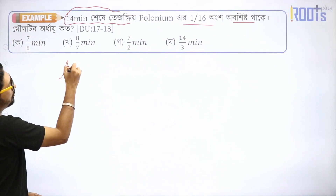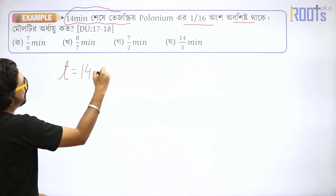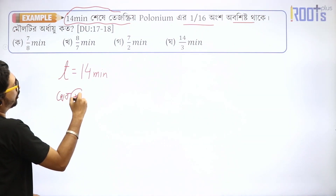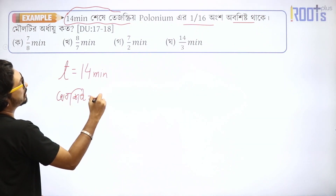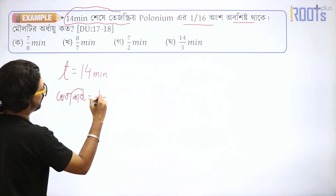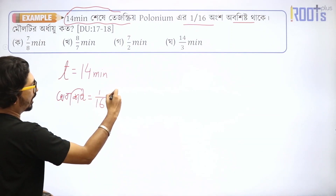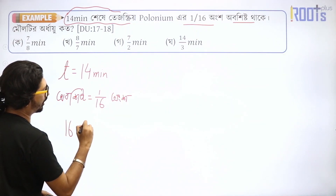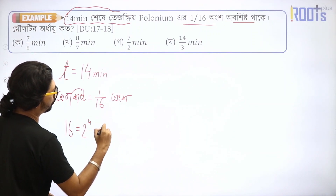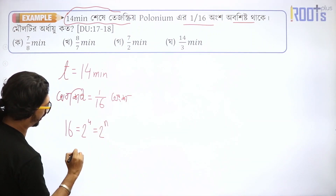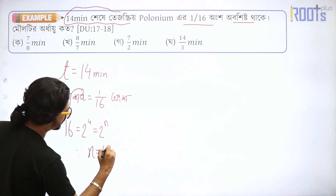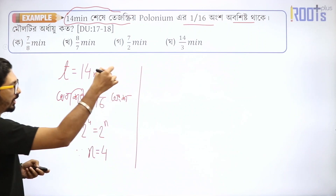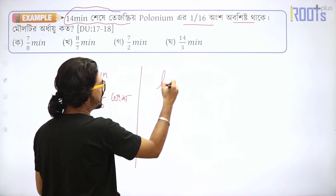It is very difficult to get the same result without technique, so we will give tier values. The time given is 14 minutes. The remaining fraction is 1/16. Since 1/16 equals 2 to the power 4 equals 2 to the power n, the value of n is 4.